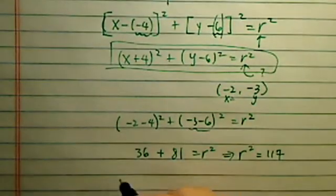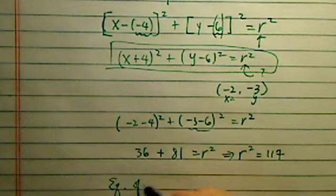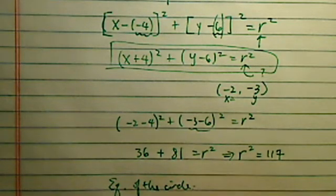So basically equation of the circle becomes x minus minus 4 which is plus 4 squared plus y minus 6 squared is equal to r squared which is 117.